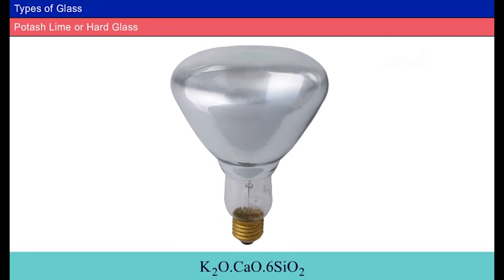Potash lime or hard glass: Raw materials are Silica, calcium carbonate, and potassium carbonate. Composition of hard glass in percentage by weight: The approximate composition is K2O·CaO·6SiO2.